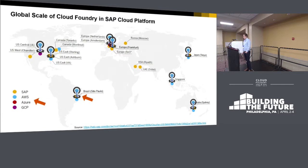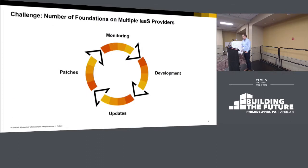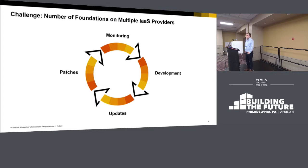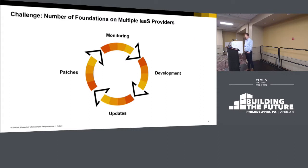These dimensions of scale also bring some challenges, and I'd like to share some of those challenges and experiences we had. Challenge number one is the number of foundations on multiple infrastructure as a service providers. Here we have different challenges and different sorts of processes we have to keep. First is the development process — the challenge is that we have to keep the pace of CF deployment versions, which is very important for us, and to validate those CF deployments on the different infrastructures. Continuous integration is key here, and we have set up internal staging landscapes on all of the IaaS providers in order to validate what we are consuming from the Cloud Foundry community.